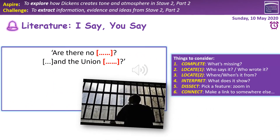Fourth quotation — a classic one. The answers: 'Are there no prisons and the union workhouses?' Scrooge is speaking in Stave 1 to the portly gentlemen when they've asked for a donation. What does it show? His rejection of Christmas and charitable giving, and the fact that he associates being poor with essentially being criminal. A feature: the use of questions — he sees this as almost like a logical process, an argument to be won, and this interrogative structure where it's not really dialogic is important. A link: the classic link is to Stave 3, when Scrooge's words are repeated back to him by the Ghost of Christmas Present.